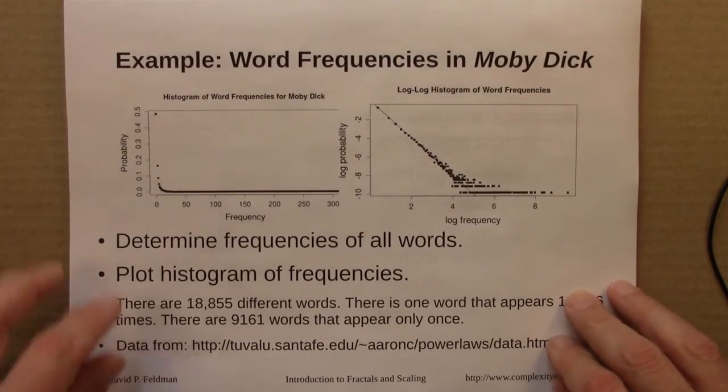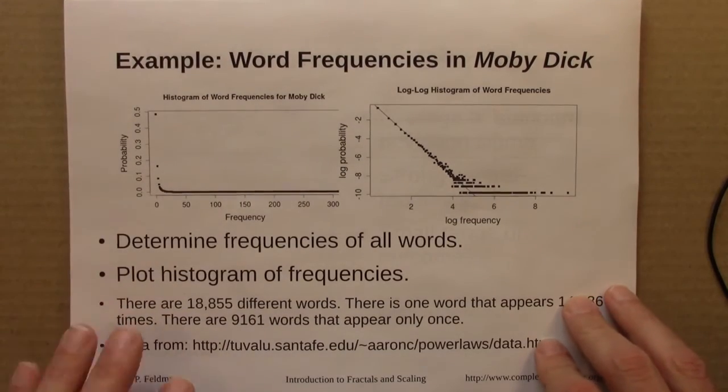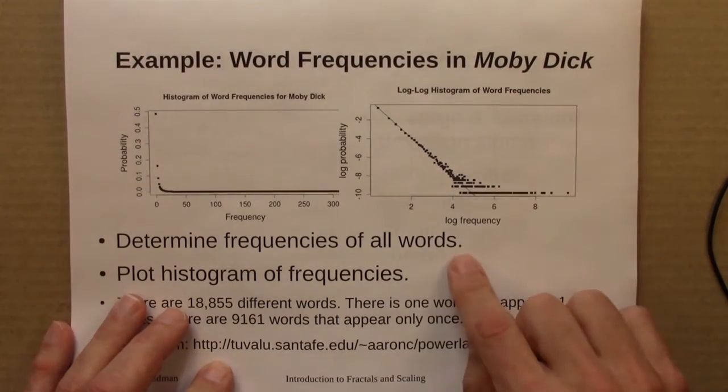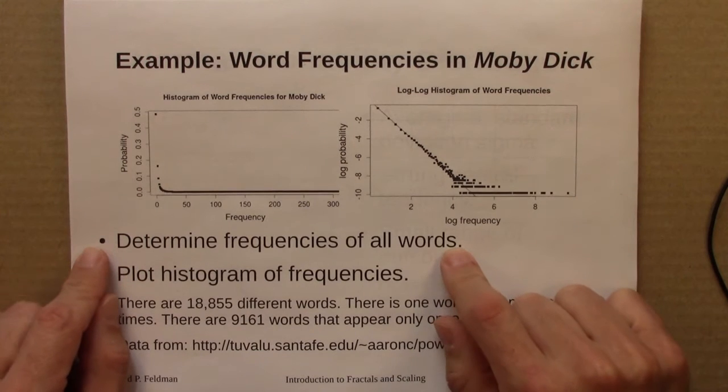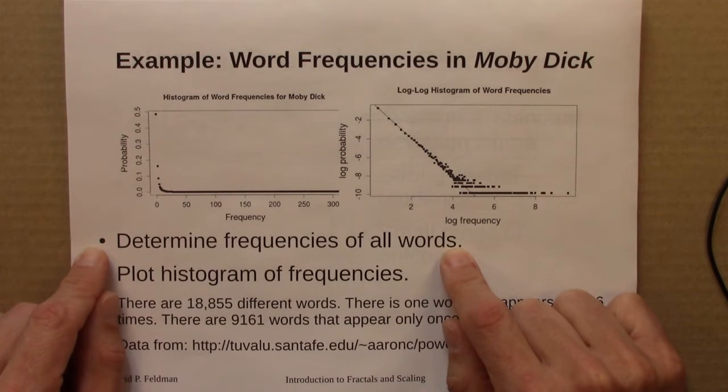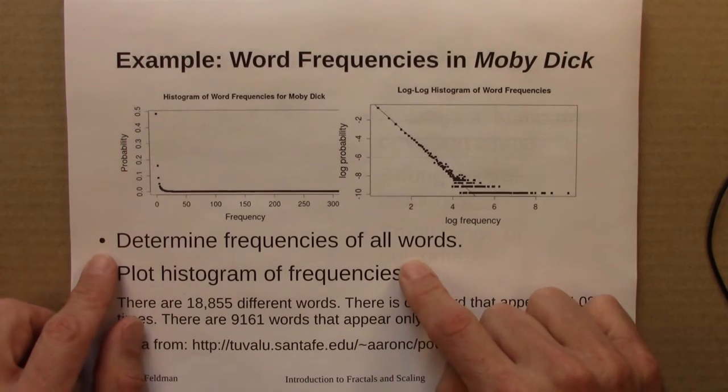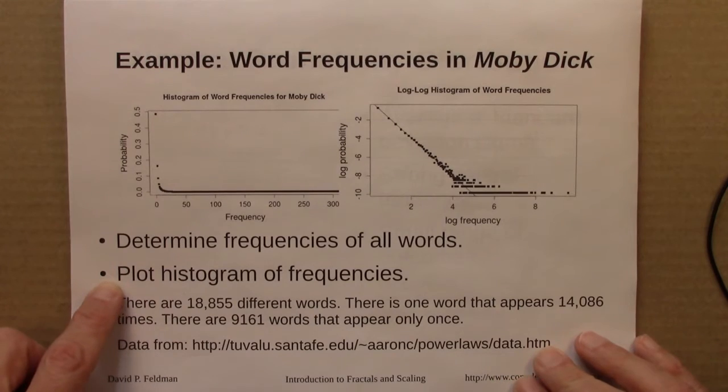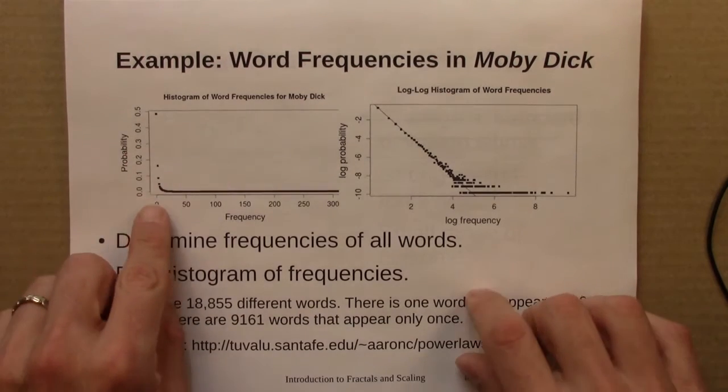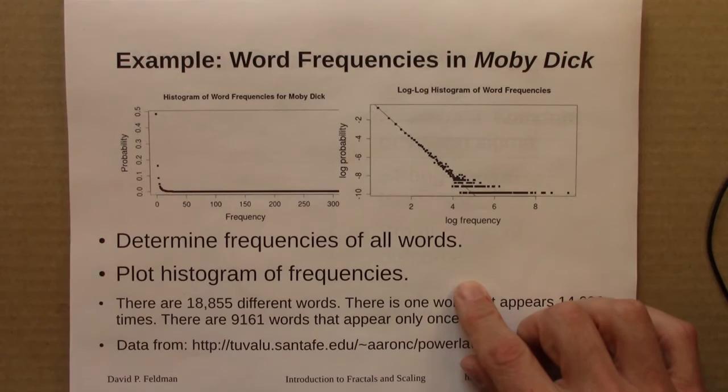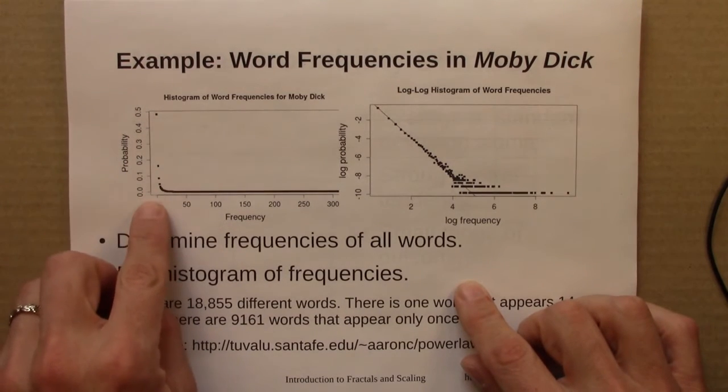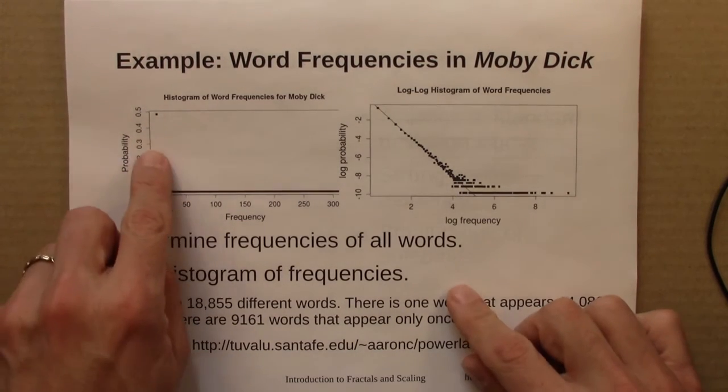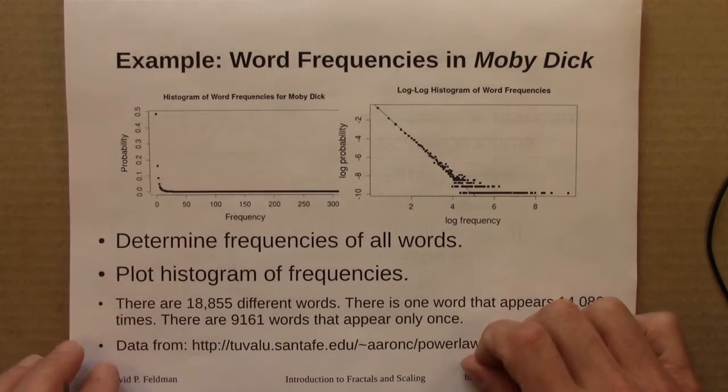Then the example that I used to start us off was considering word frequencies in the novel Moby Dick. So what we did is determine the frequencies of all words. How often does the word whale appear, or the, or sea, or ocean, or blue. And then we get a whole lot of frequencies. Every word has a frequency associated with it. And we plot a histogram of those frequencies. And if we do that, here's what we see. We see that there are a lot of words, almost half the words, that appear exactly once.